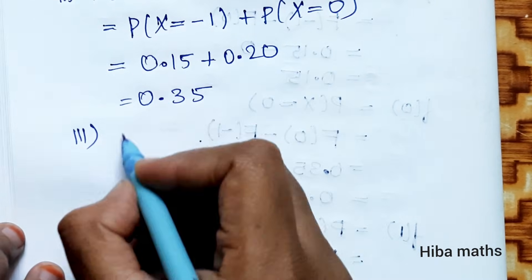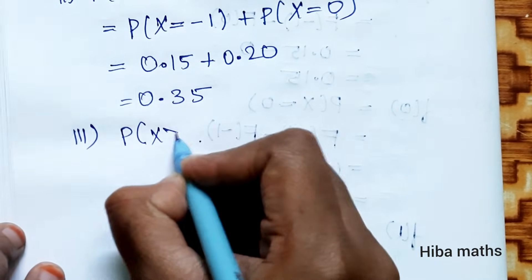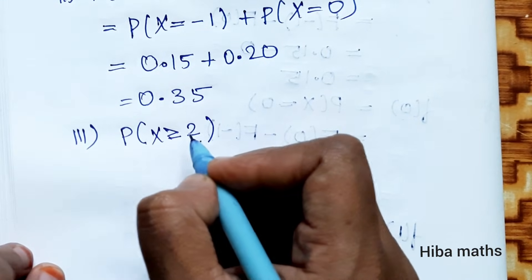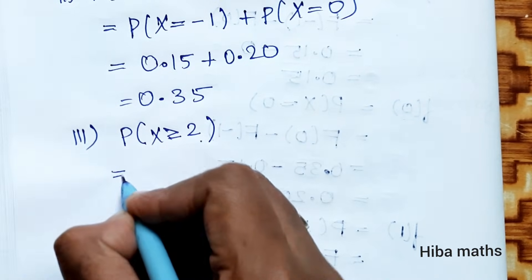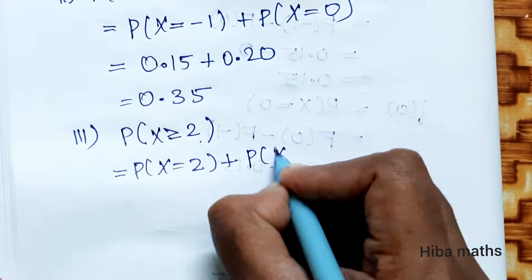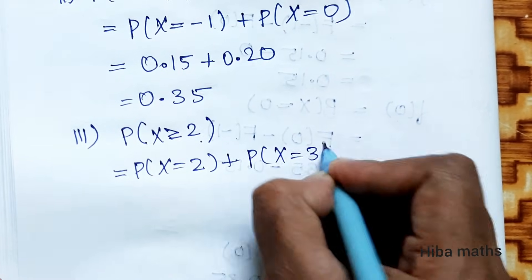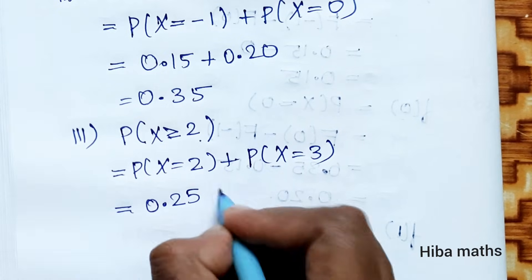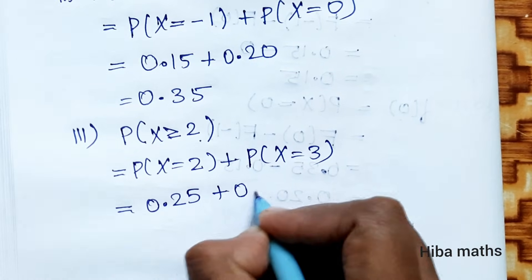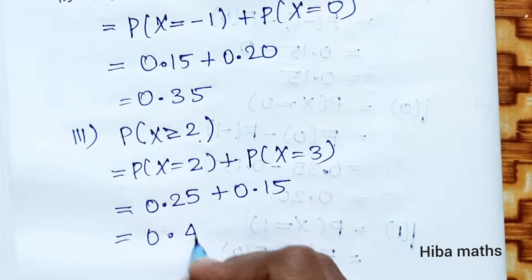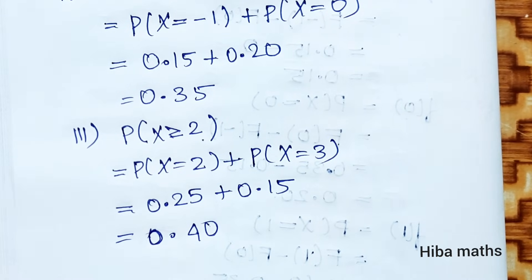For the third sub-part, P(x greater than or equal to 2) equals P(x equals 2) plus P(x equals 3), which equals 0.25 plus 0.15, that is equal to 0.40. Thank you so much for watching.